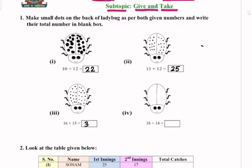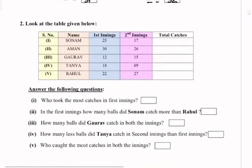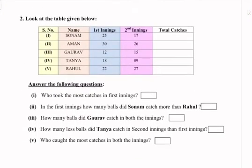Question 4: 18 plus 14 — 18 dots on the left side: 1, 2, 3, 4, 5, 6, 7, 8, 9, 10, 11, 12, 13, 14, 15, 16, 17, 18 — and 14 dots on the right side: 1, 2, 3, 4, 5, 6, 7, 8, 9, 10, 11, 12, 13, 14. The total number of dots are 18 plus 14 equals 32.